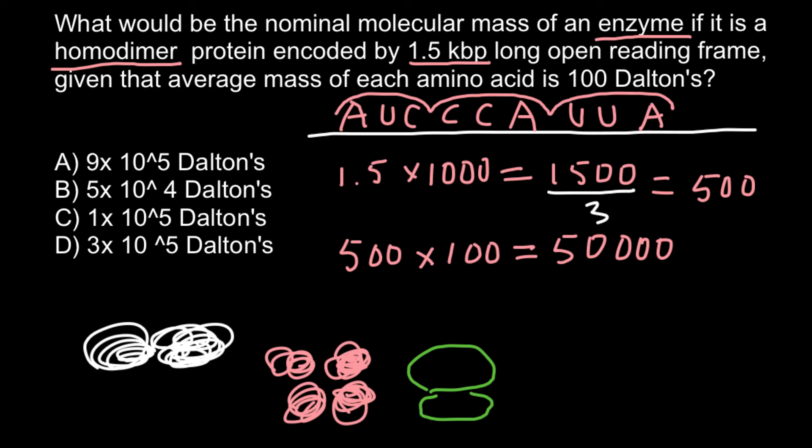Because our enzyme represents a homodimer and each protein here would weigh 50,000 daltons, that means we have to multiply this number by two. 50,000 multiplied by two equals 100,000, and this is going to be the weight of this homodimer protein.